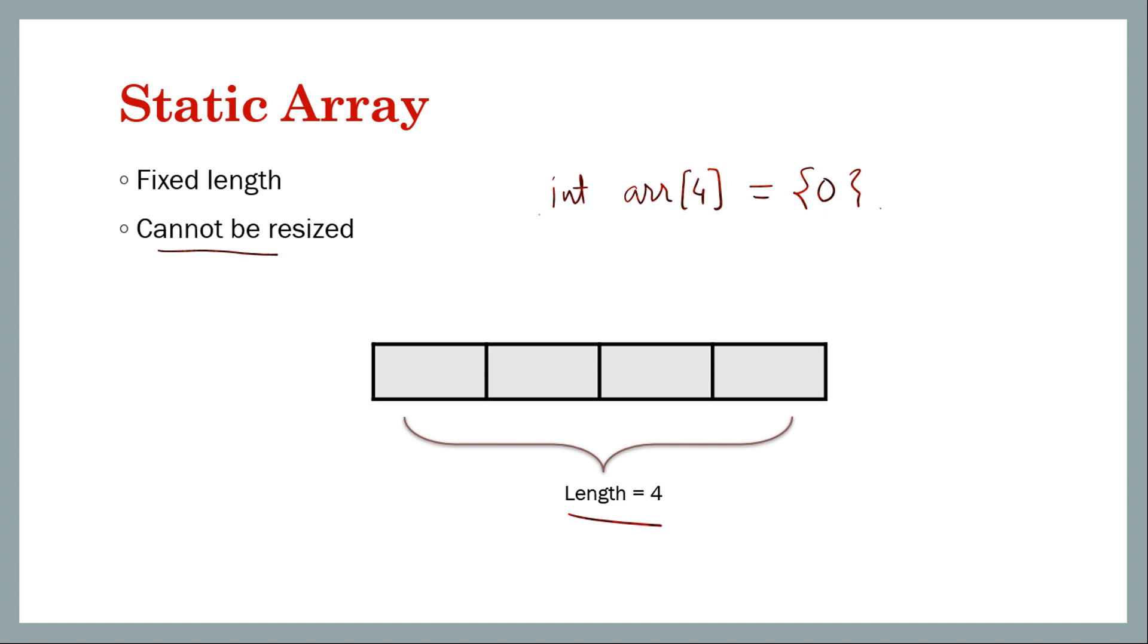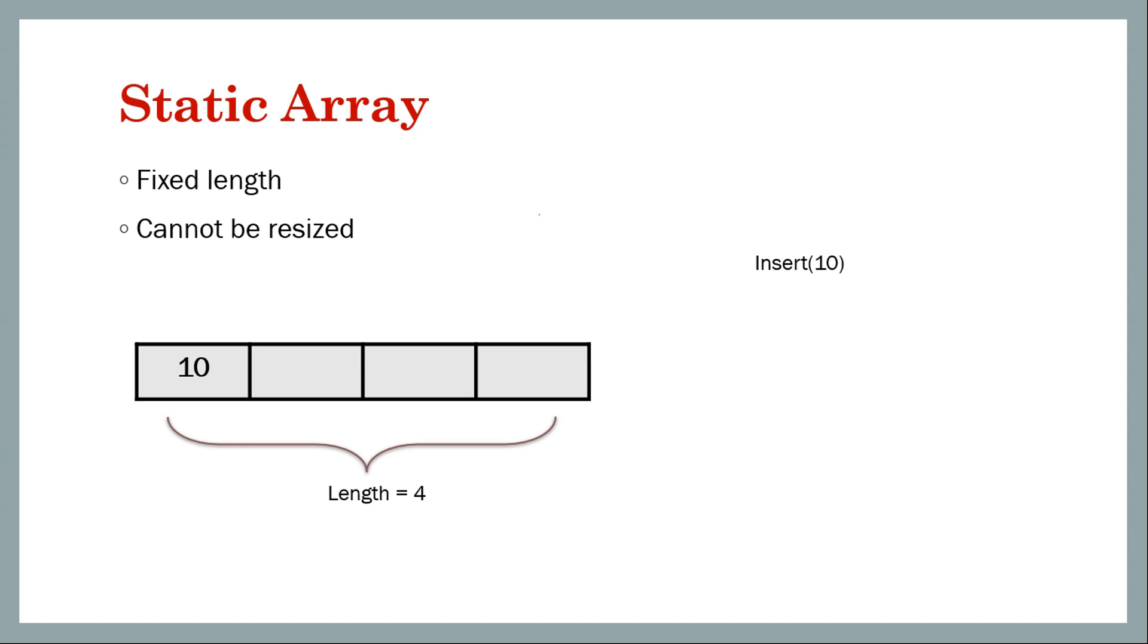Then we can only insert or update these 4 values and not more. So what happens, we can insert 10 at the first place. You can also write index and the way to do it is like this: ARR[0] = 10 in C++.